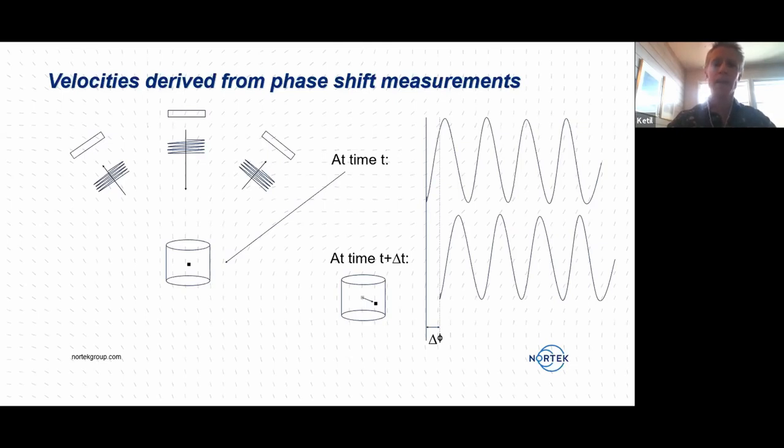Then at time T plus delta T, we send another very short pulse. By the time that pulse reaches this volume, then the particles in that volume will have moved a little bit. This means that the signal comes back to the receivers with a different phase from what we sent out. And we measure that phase to calculate the frequency shift from that.